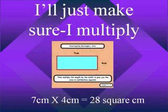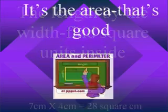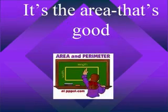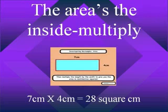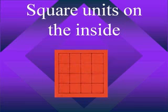Multiply the length by the width. Find square units inside — it's the area. The area's the inside. Multiply. Square units on the inside.